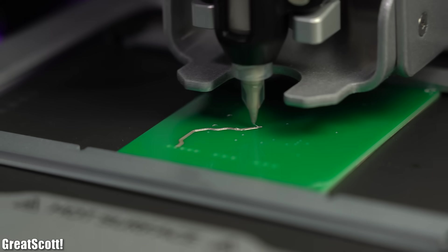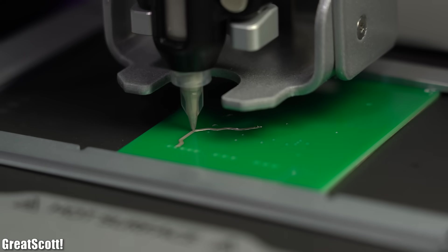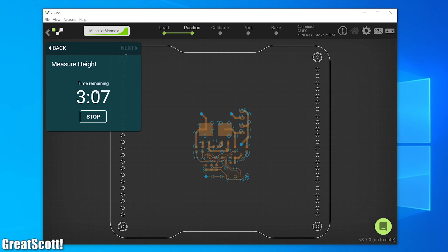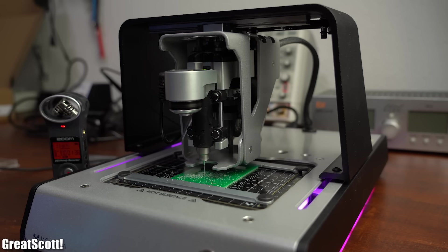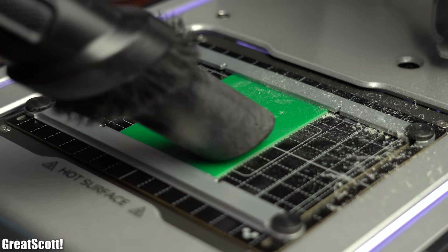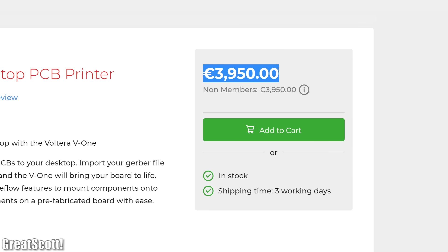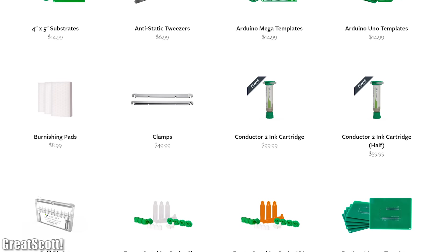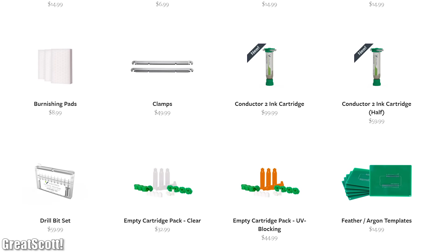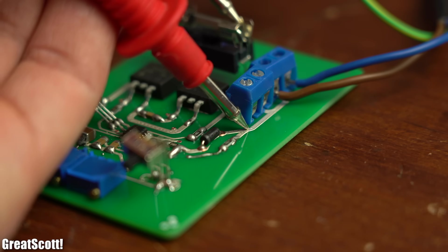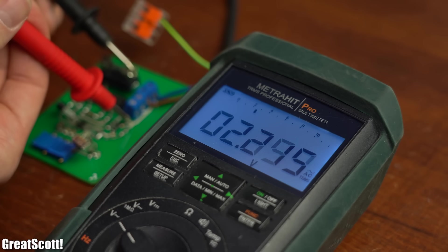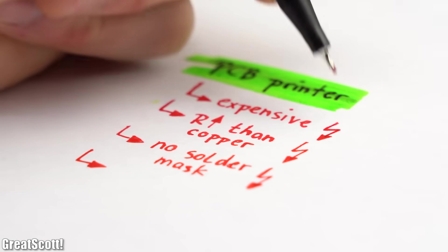Now even though my second PCB print worked out smoothly and the software and printer are a joy to work with, I highly doubt that it will be the future of PCB manufacturing. The reasons are simple: not only is the printer very expensive, it also requires consumables which are also quite expensive. And while the ink is highly conductive, it is certainly not as conductive as copper, and you should not forget that the ink does not come with a solder mask, which can be a problem for certain PCB designs. And while all of that sounds rather negative, I want to end this video by saying that I think that this printer can be really useful for universities or companies that want to prototype and test out a new PCB design in just a couple of hours.